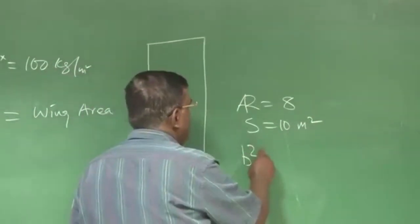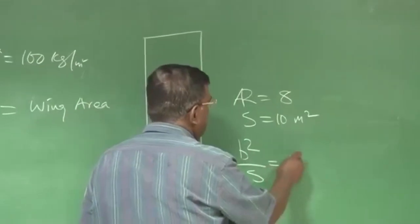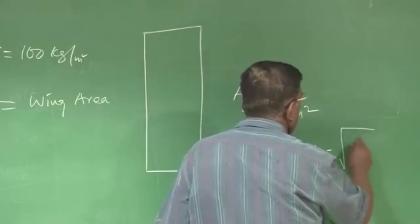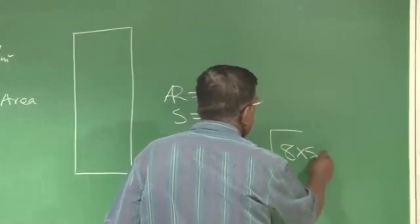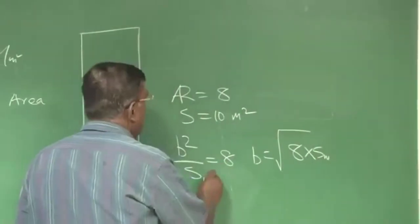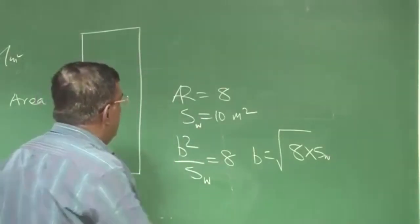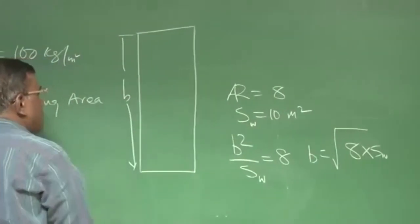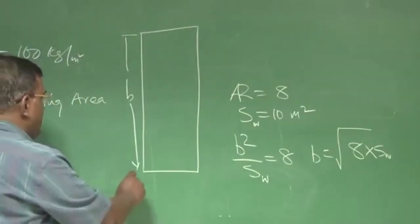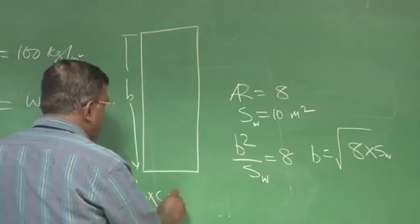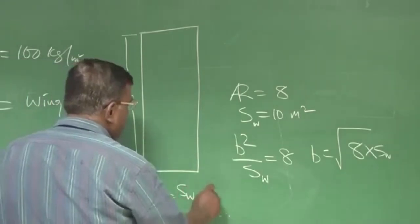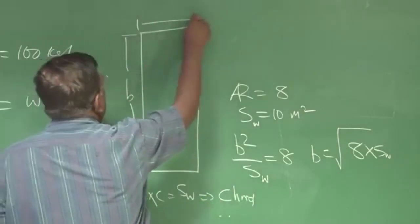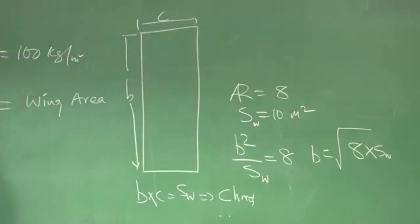Then I know B squared by wing area is equal to 8. So, B equals the square root of 8 into wing area S_W. From there I get a value of span. Once I know span, I know B into C is equal to wing area. So I get the value of chord.